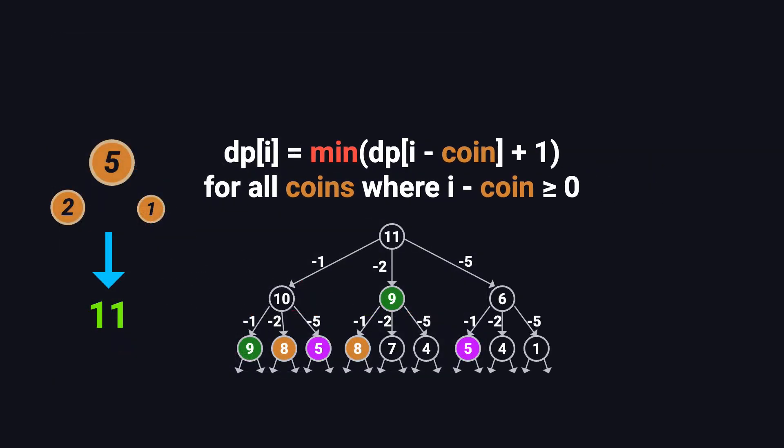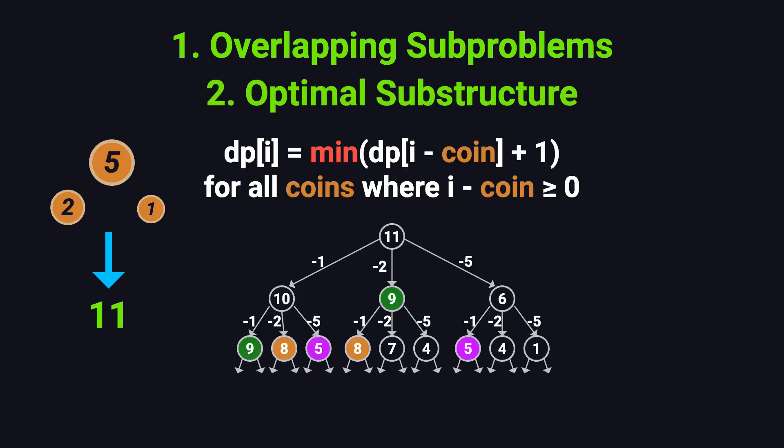So to wrap things up, why is CoinChange a textbook dynamic programming problem? First, it has overlapping sub-problems. You solve the same sub-goals, like making 8 or 6, multiple times. Second, it has optimal substructure. The best way to make 11 coins depends on the best ways to make smaller amounts, like 10, 9, or 6. If the sub-solutions are optimal, the whole solution is optimal. Because of these two properties, dynamic programming is the perfect approach for this problem.